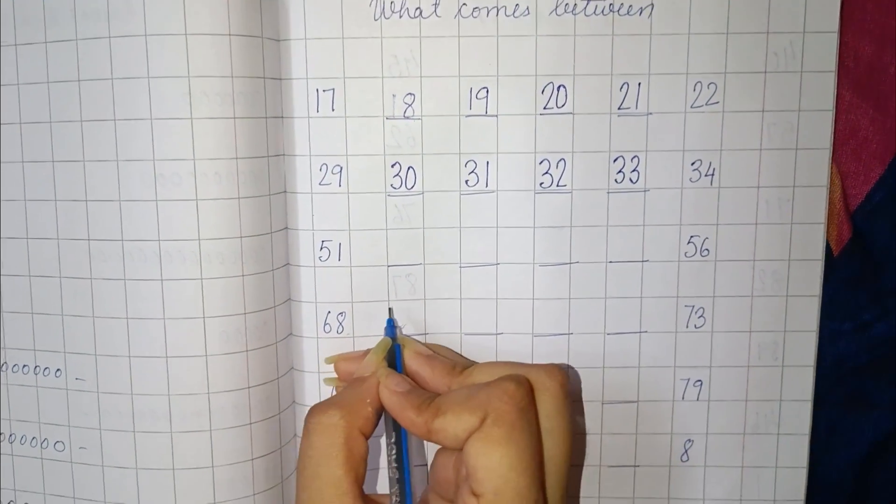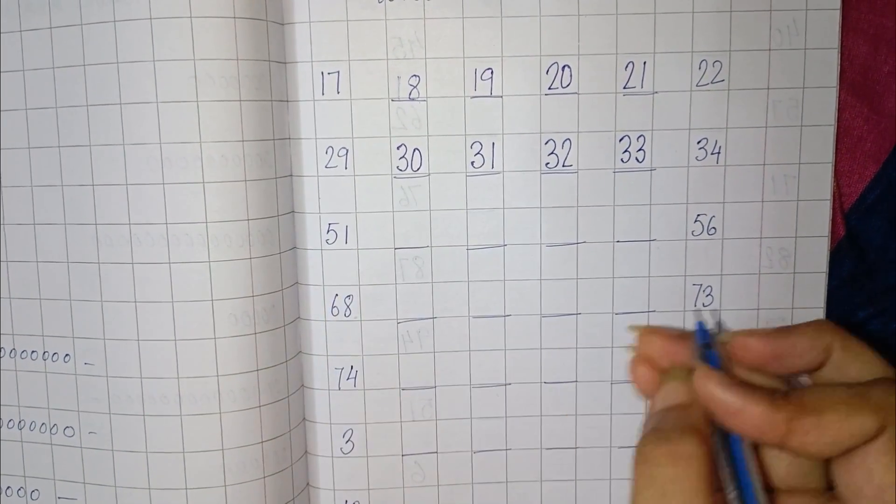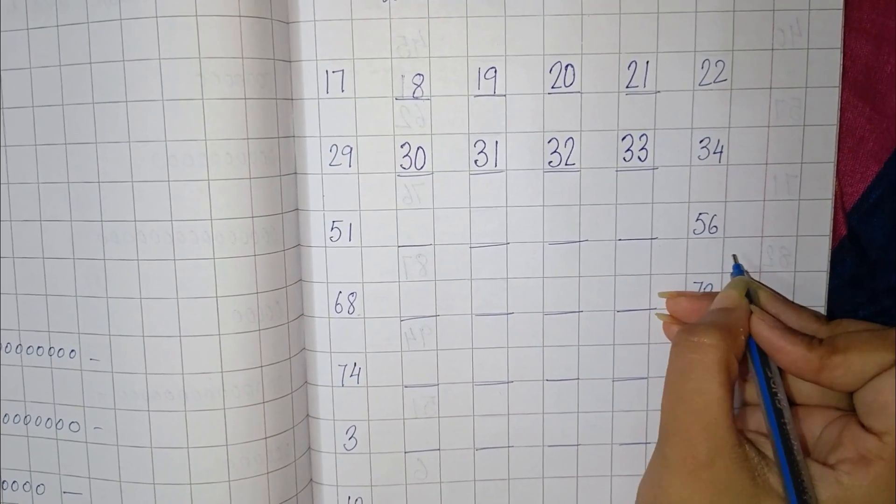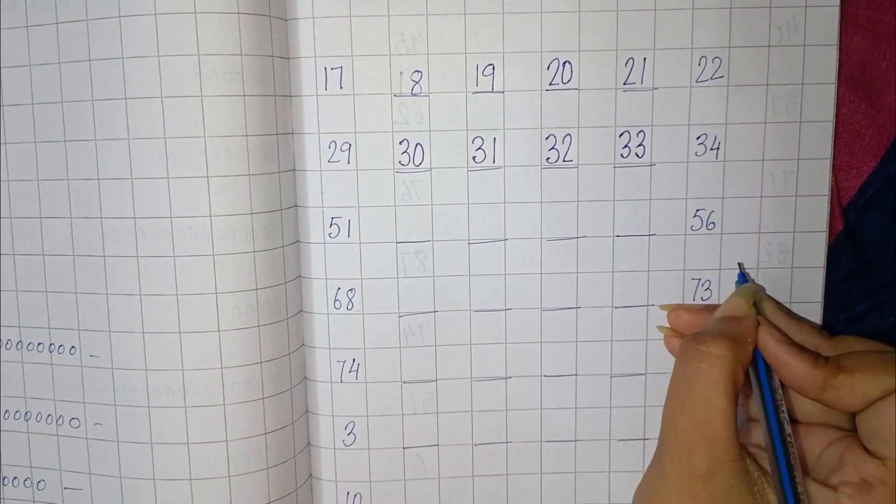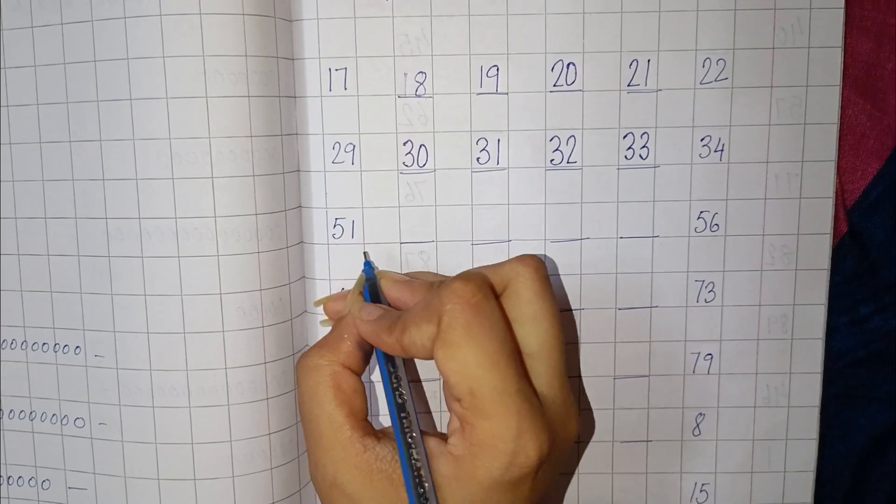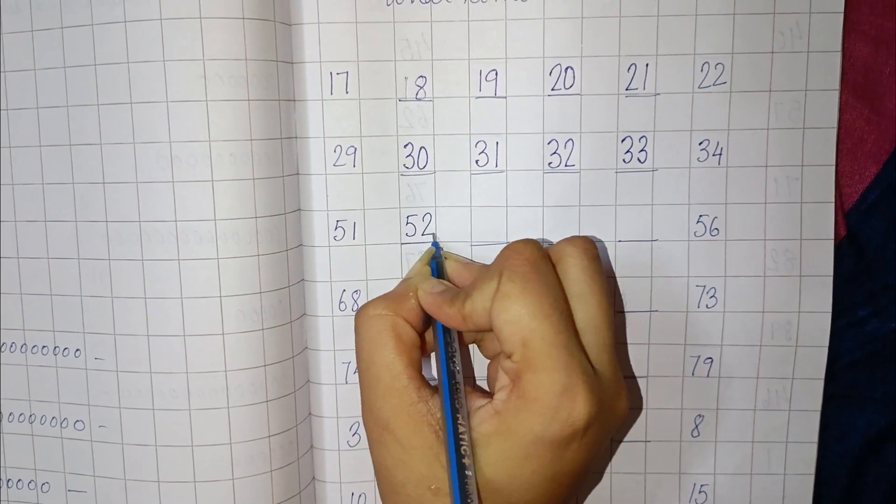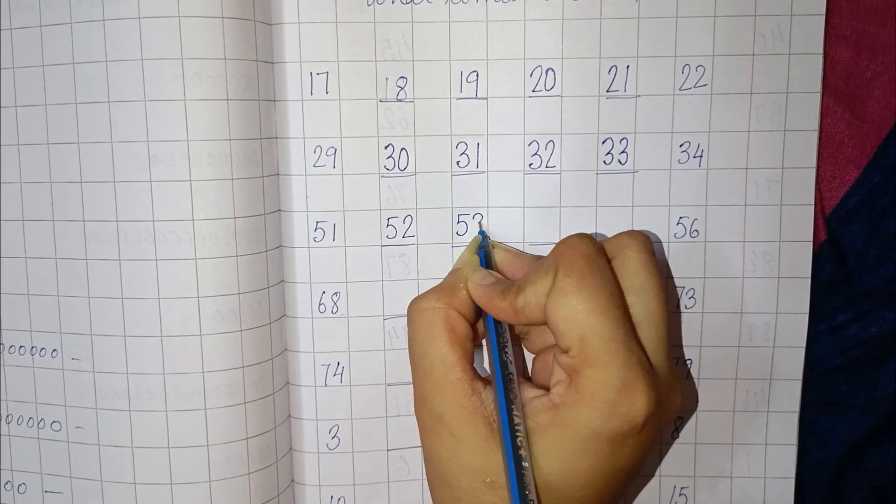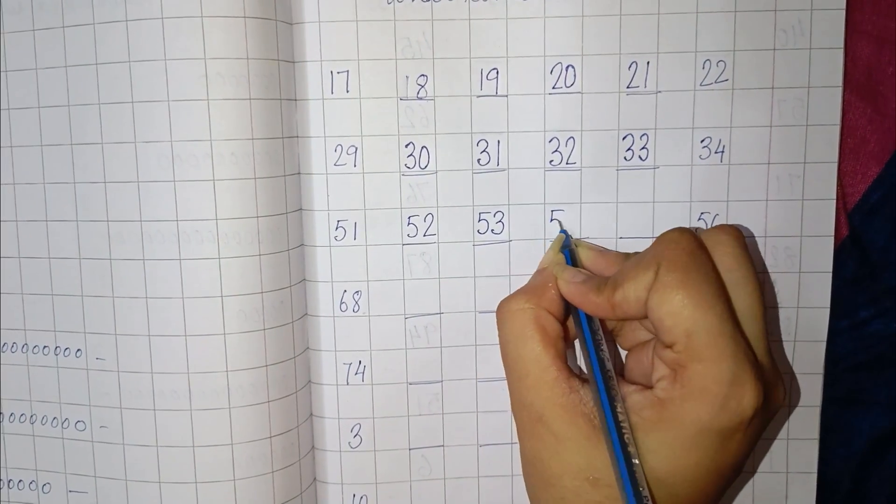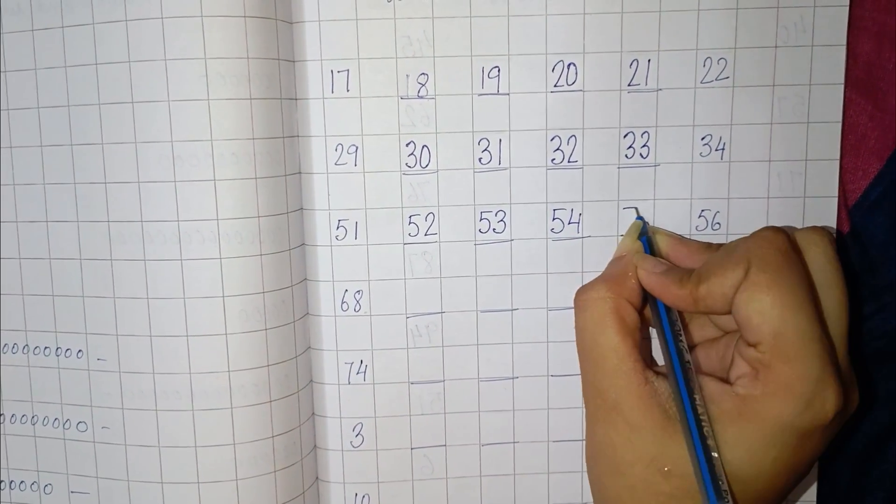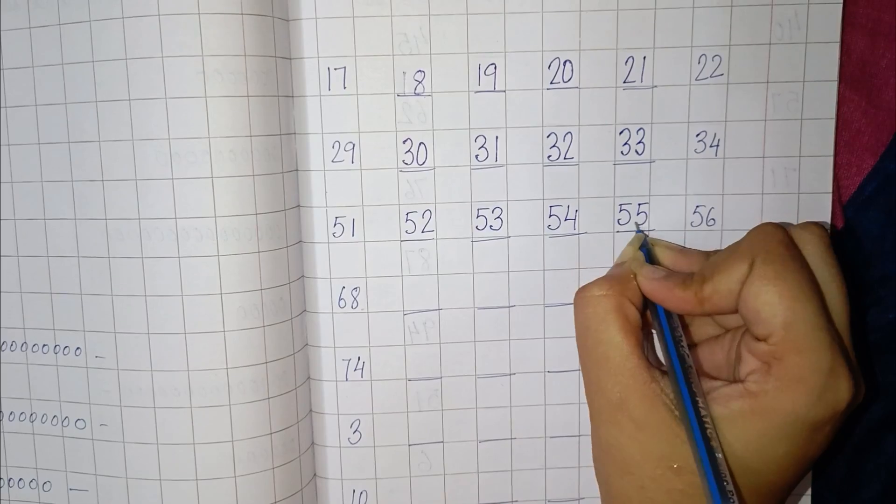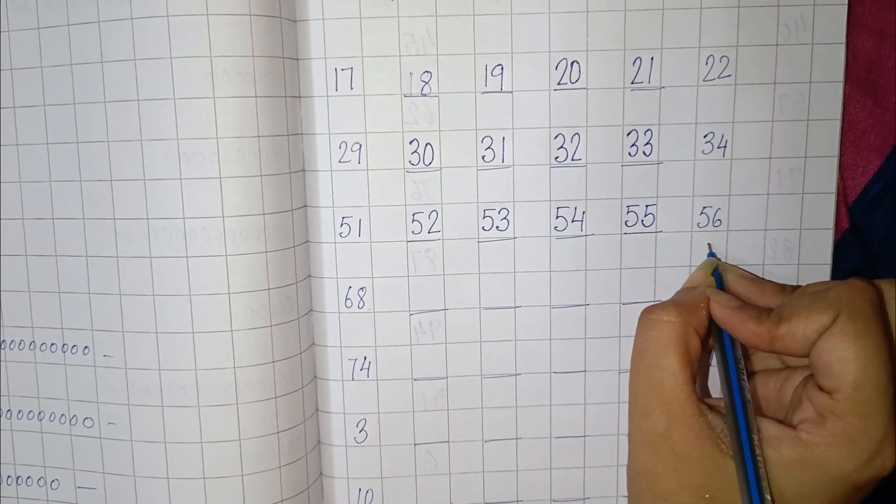Next is 51 and 56. Now you have to find numbers between 51 and 56. So 51, then 52, 53, 54, 55, and 56.